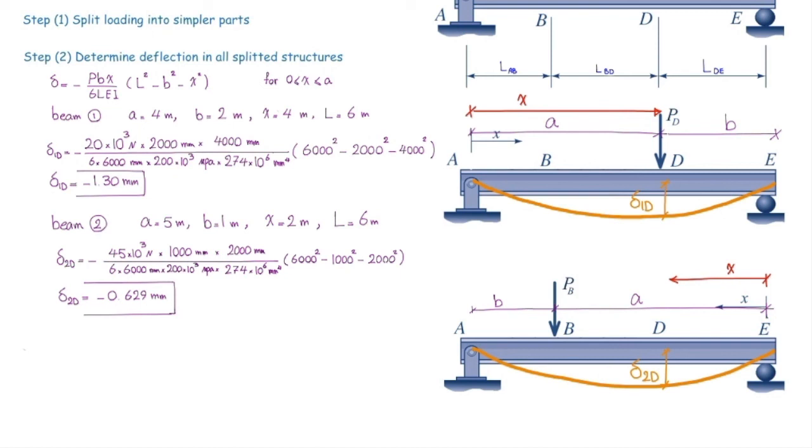All right. We have determined deformation in beam number 1 and 2. How much is the total deformation in the original beam? We simply add them together. So delta D is delta 1D plus delta 2D. And that would be equal to 1.3 plus 0.629, which is 1.929.